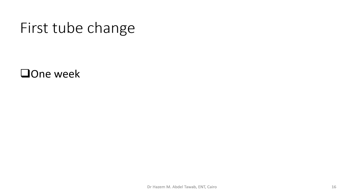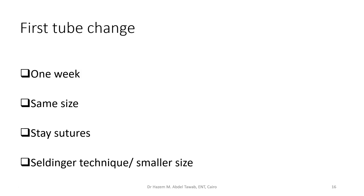When should you do the first tube change? An average of one week to ten days — preferably one week. Start with the same tube size, using the stay sutures to assist with the change. If you find difficulty inserting the same size, try a half-size smaller, or use the Seldinger technique: insert a suction catheter into the stoma, then slide the tracheostomy tube along the catheter into place, then remove the catheter.